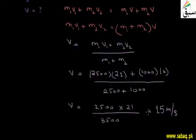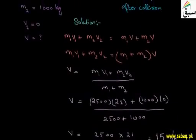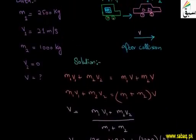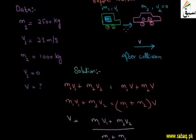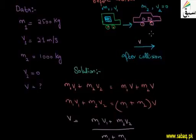That means the common velocity after the collision is 15 meters per second. When this truck and car collide and move together, the velocity we have calculated is 15 meters per second.